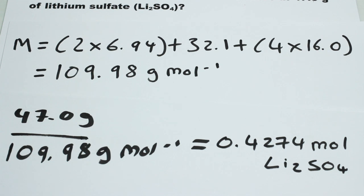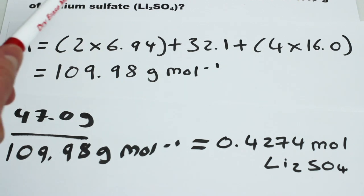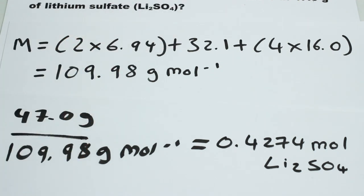So now we have worked out the number of moles of lithium sulphate in the sample, but how do we work out the number of moles of lithium ions? Well, we have to look at the chemical formula of lithium sulphate again, because as well as indicating the number of lithiums, sulphurs, and oxygens in each formula unit, the chemical formula also indicates the number of moles of lithium ions and sulphate ions present in one mole of lithium sulphate. According to the chemical formula, in one mole of lithium sulphate there are two moles of lithium ions and one mole of sulphate ions.